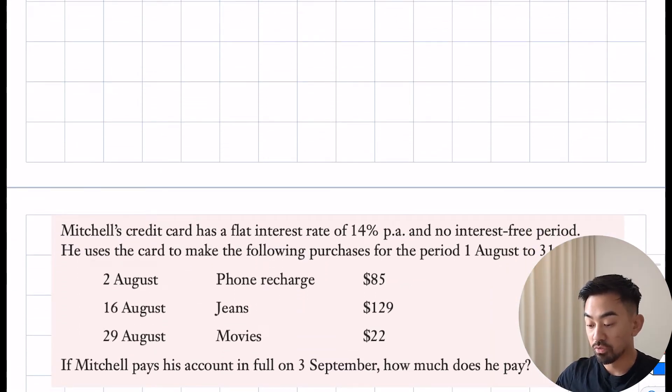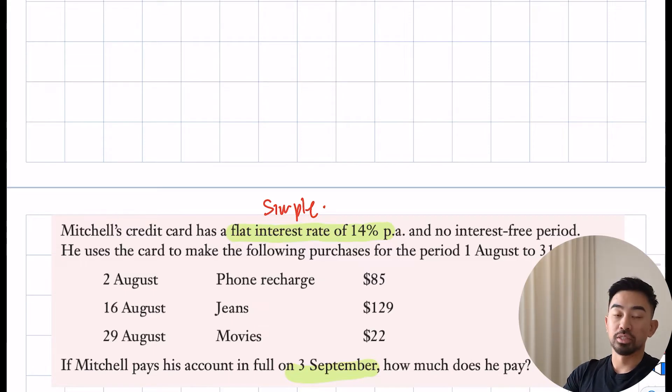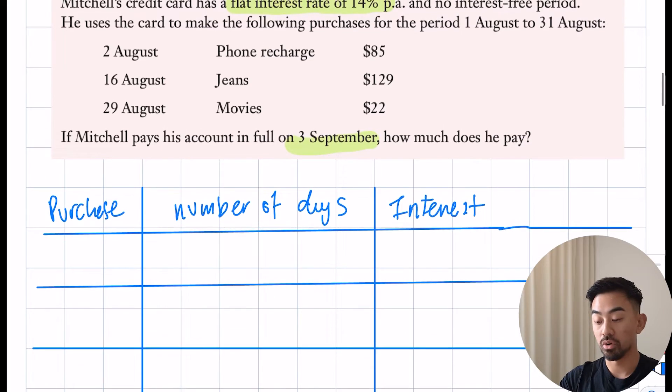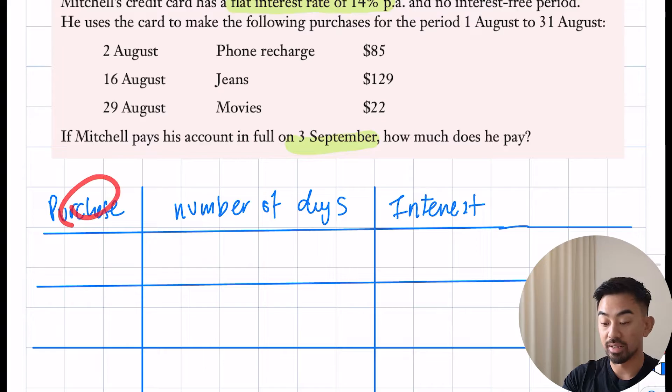Mitchell's credit card has a flat rate interest of 14% per annum and no interest-free period. He uses the card to make the following purchases from the 1st of August to the 31st of August. If Mitchell pays his account in full on the 3rd of September, how much does he pay? A few things to note: it's flat rate, so simple interest. It has no interest-free period. Whenever I do these credit card questions with multiple payments, I like to draw myself a table with three columns: purchase, number of days, and the amount of interest.